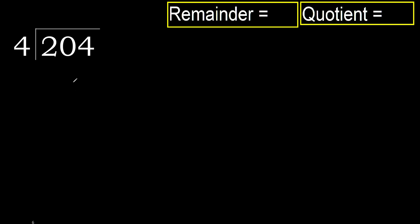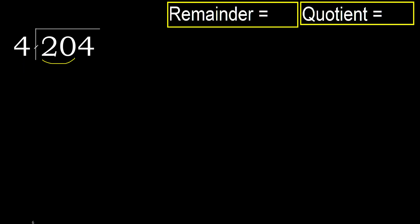200 divided by 4. 2 is less, therefore next. 20 is not less, therefore with 20, 4 multiplied by which number is nearest to 20 but not greater?